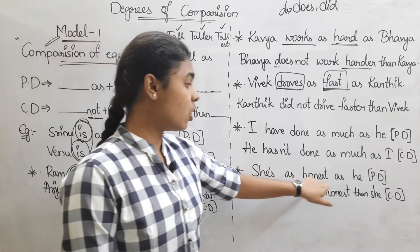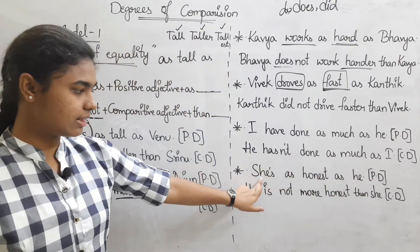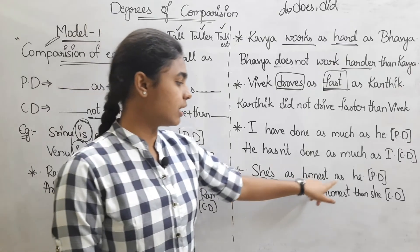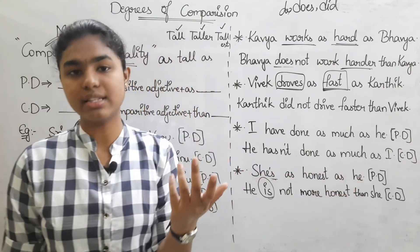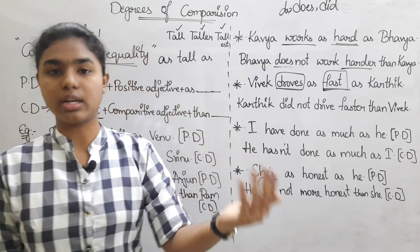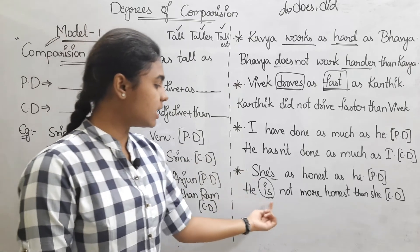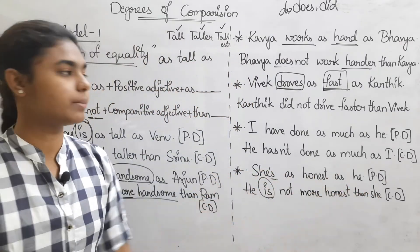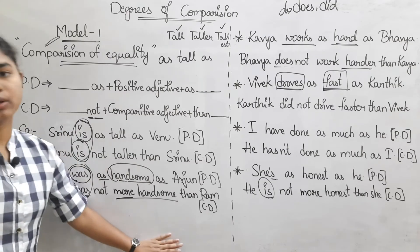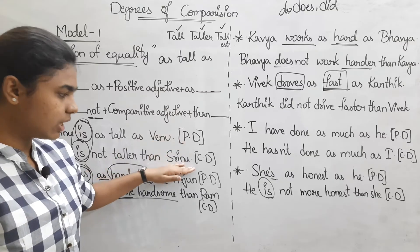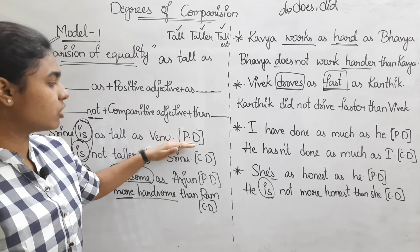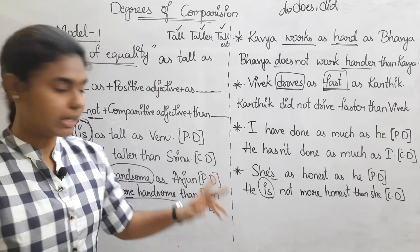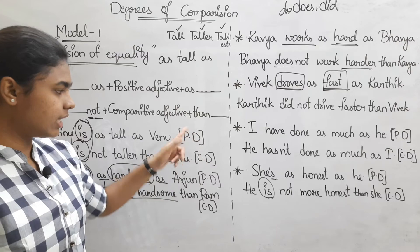Next: She is as honest as he. Present tense. 'Honest' is more than one syllable, so the comparative adjective is 'more honest.' Transformation: He is not more honest than she. Very simple. This completes the first model — positive degree to comparative degree.